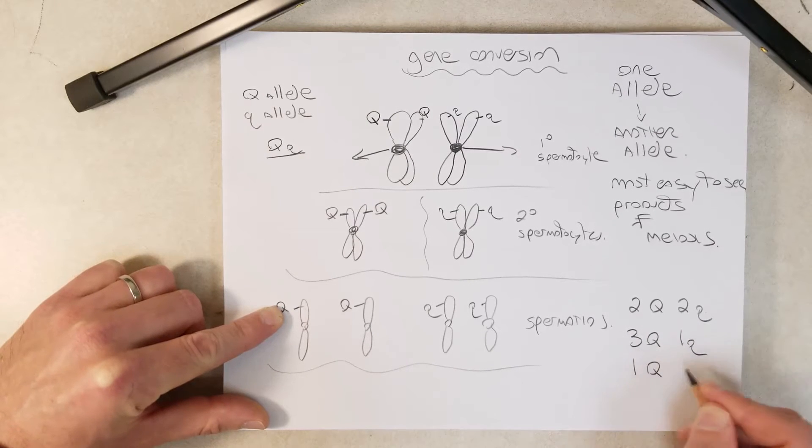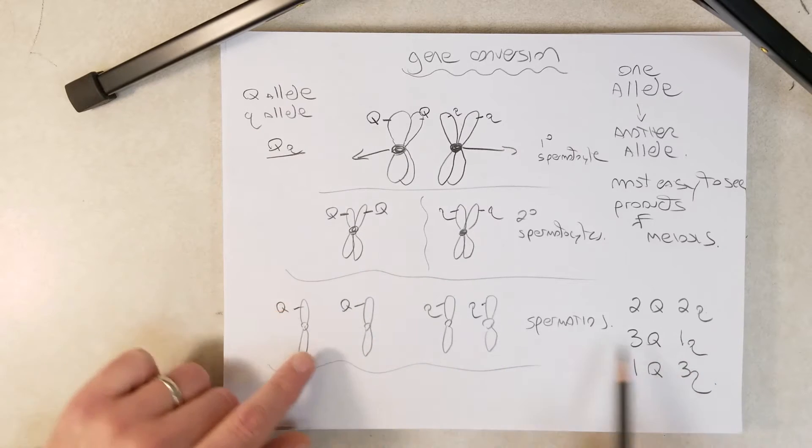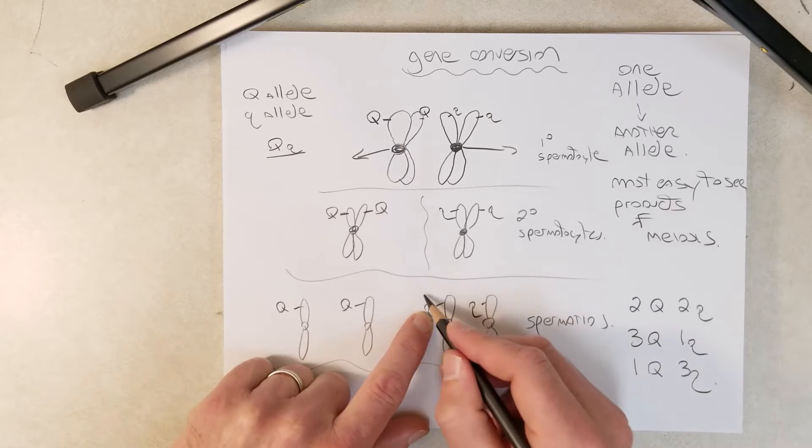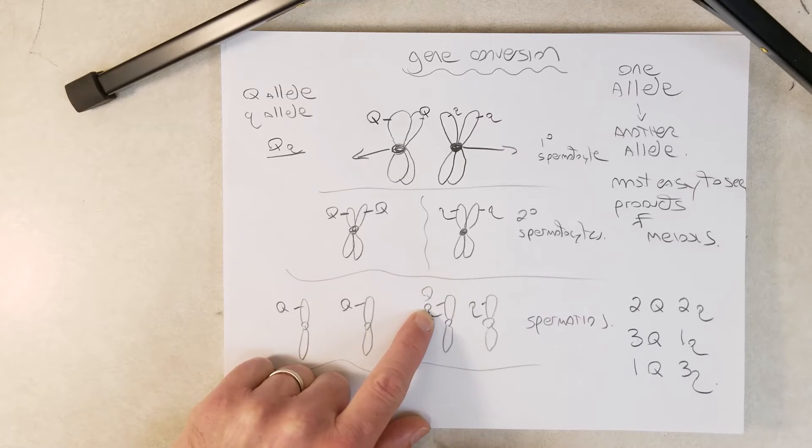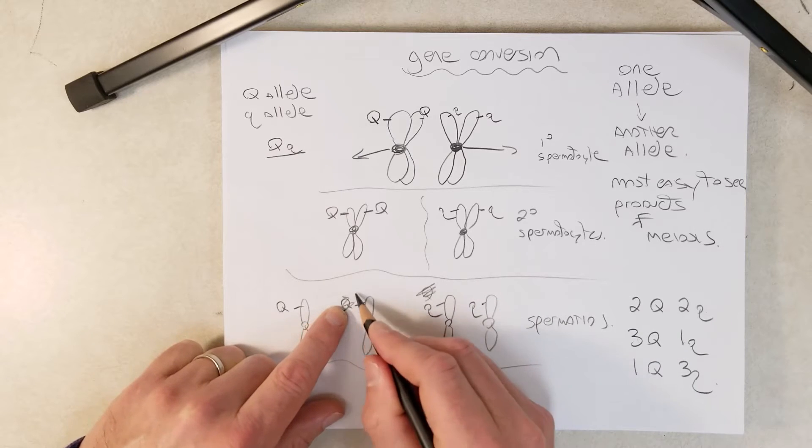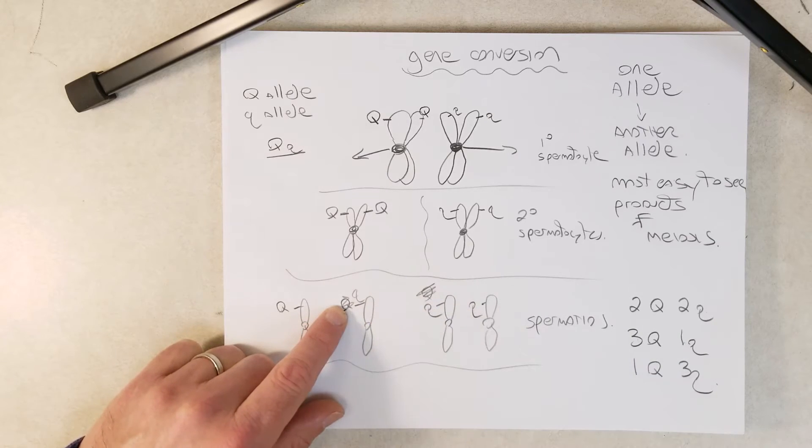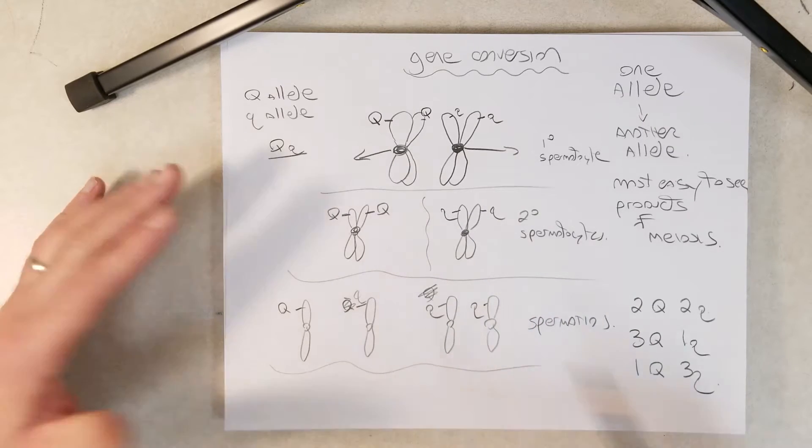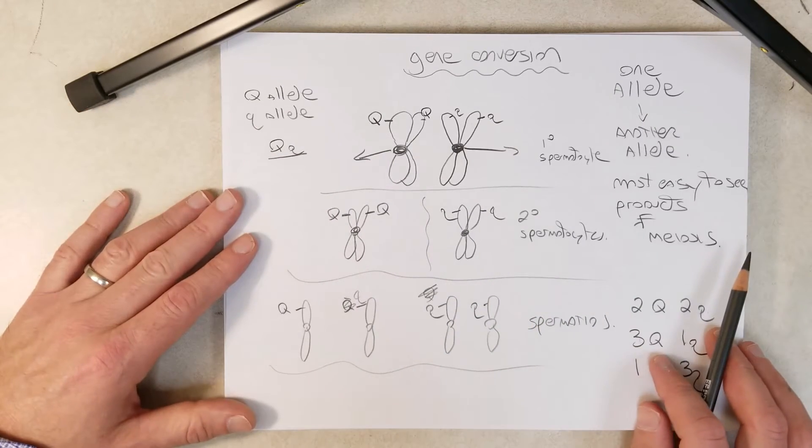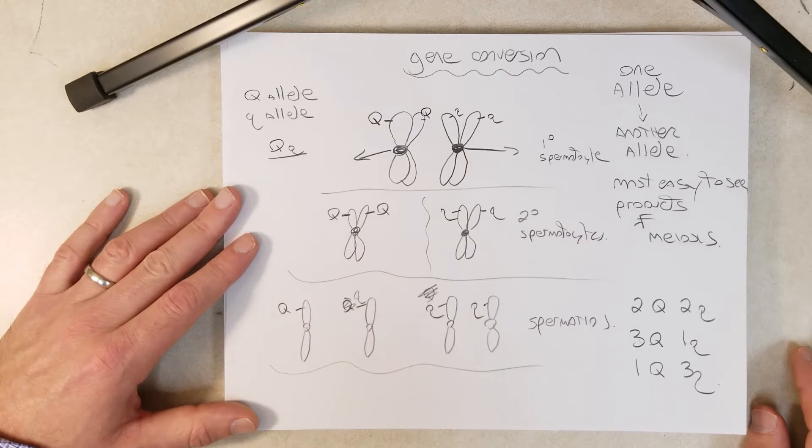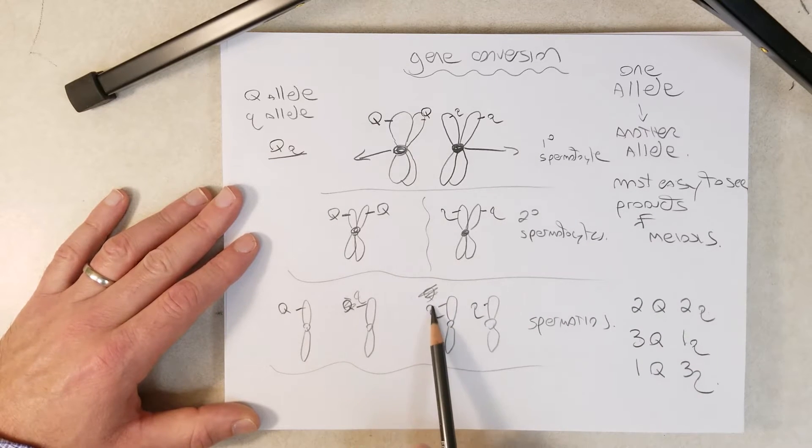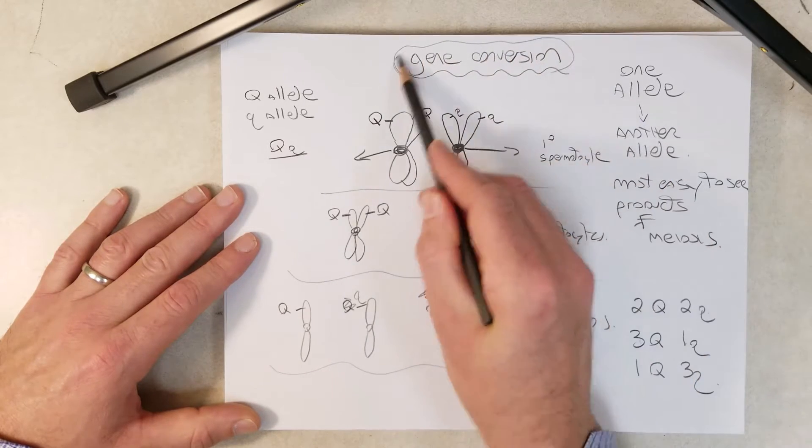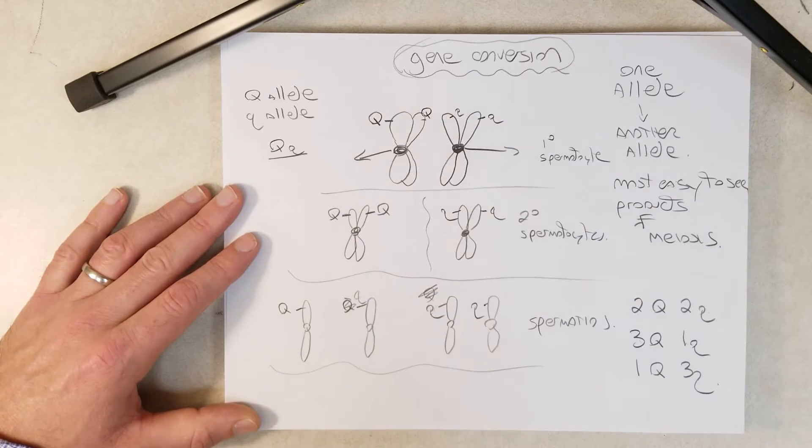Well, what if we saw three big Q and one little Q? Or one big Q and three little Q? Well, that would say this little Q was somehow converted to the big Q, or the other way, this one right here was converted to a little Q. And it occurs sometimes, and when it does occur, it's called gene conversion.